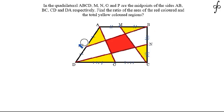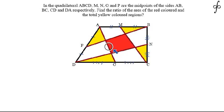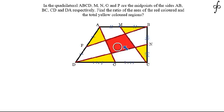Now BP, DN, CM, and AO are joined to create a strip area. We need to find the ratio of this red colored area to the total yellow colored area — that is, the ratio of this area to the total of these four yellow areas.